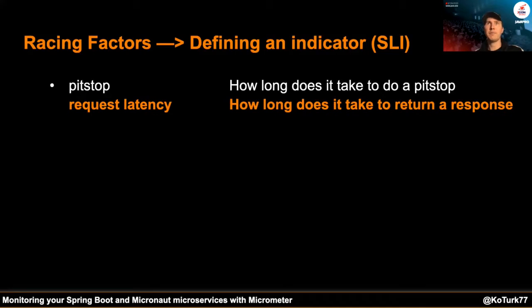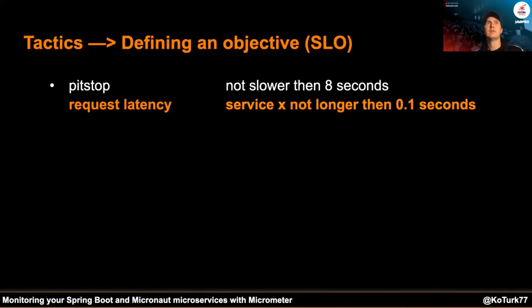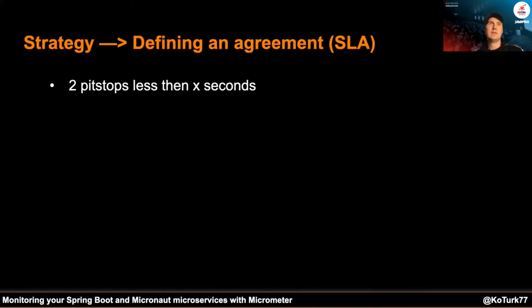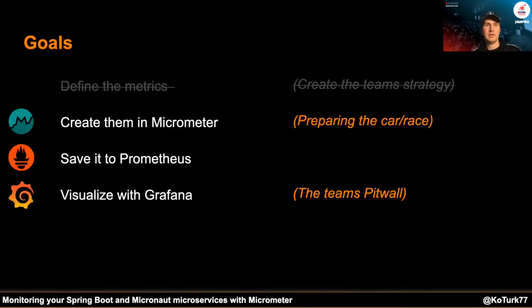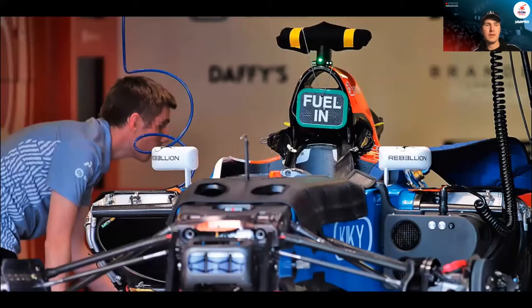You can see it like race factors, tactics, and strategy. A pit stop and how long it needs to take — that's like request latency. A service level objective: you want your pit stop to be less than eight seconds. An SLA: you want two pit stops less than a certain number of seconds. So we have one SLA and we're going to work that out with some live code. Let's prepare the car, let's tune it to win the race.